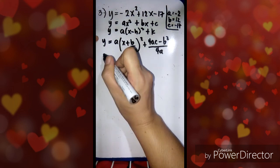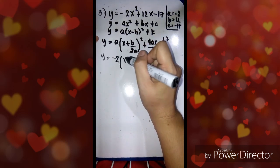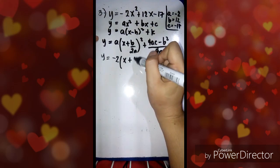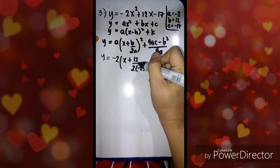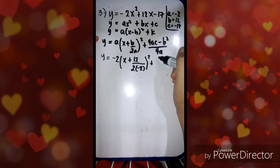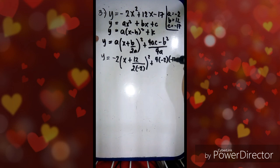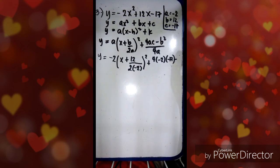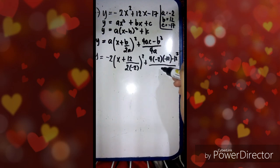Now we're going to substitute the values. We have y equal to — a is negative 2 — times the quantity of x plus our b is 12, over 2 times a which is negative 2, square, plus 4 times a which is negative 2, times c which is negative 17, minus b squared where b is 12 and 12 squared, over 4 times a which is negative 2.